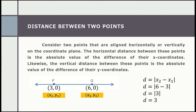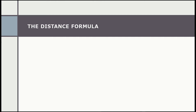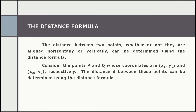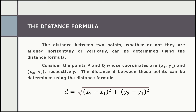But what if the given figure is in a slanting position? We can still solve for it using the distance formula. The distance between two points, whether or not they are aligned horizontally or vertically, can be determined using the distance formula. Consider the points P and Q whose coordinates are (x₁, y₁) and (x₂, y₂) respectively. The distance D between these points is: D equals the square root of the quantity (x₂ minus x₁) squared plus the quantity (y₂ minus y₁) squared.